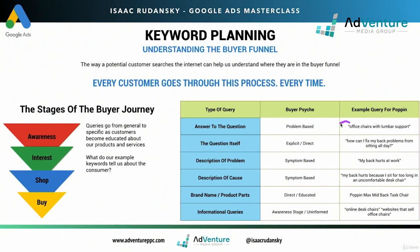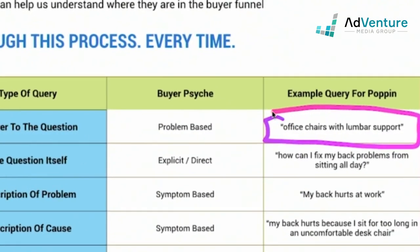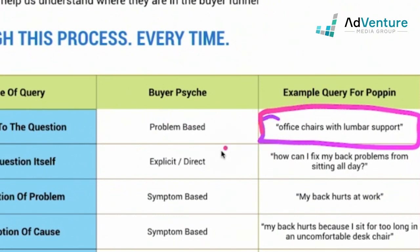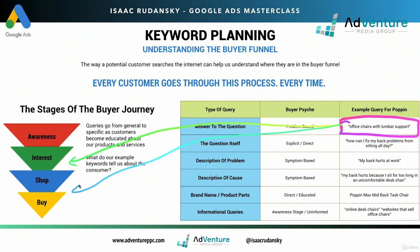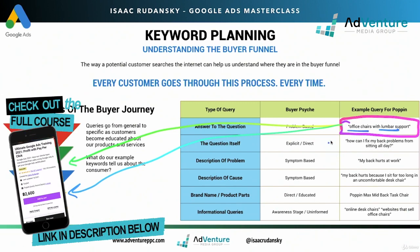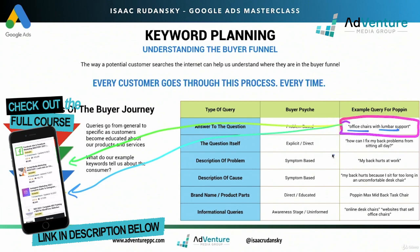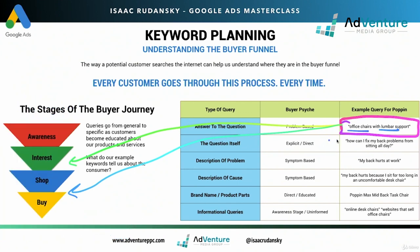Let's look at some examples. 'Office chairs with lumbar support' — where does this search query fall in the buyer's funnel? I would say it falls into either the interest stage or perhaps even the shop stage, where somebody is specifically looking for office chairs with a specific feature. They're most likely not looking for more information. From the query, it sounds like they're looking for a product. So they're either in the interest phase, or probably closer to the shop phase, because they are looking for that product.